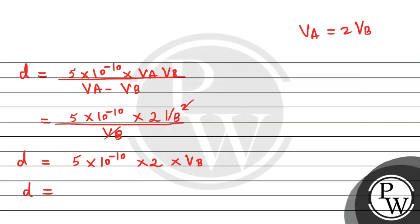We can write this as 5 into 10 to the power minus 10 times 2VB, which is VA.